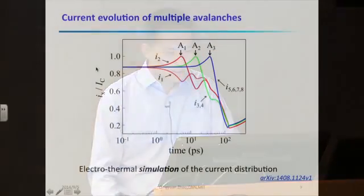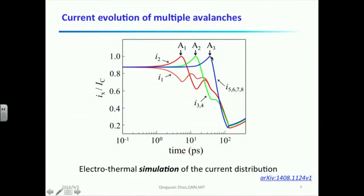We use electrothermal model to simulate the current evolution in this avalanche. And from the result, we can see there are three clearly separated avalanches which happen in a controlled timing sequence.